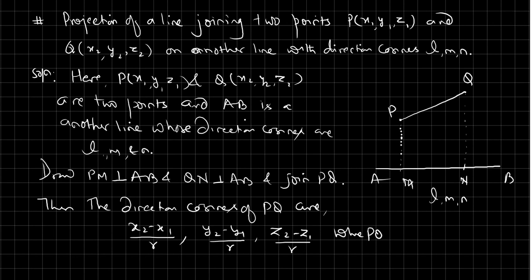Where PQ equals r, and r is the distance: the square root of (x2 minus x1) squared plus (y2 minus y1) squared plus (z2 minus z1) squared. So the direction cosines of PQ are x2 minus x1 over r, y2 minus y1 over r, and z2 minus z1 over r.